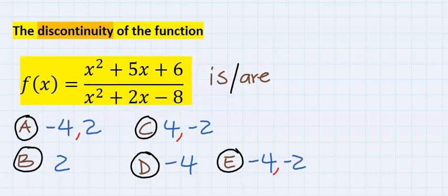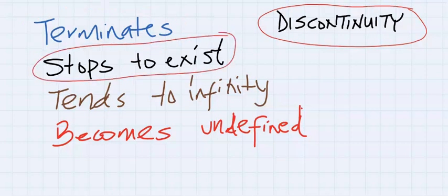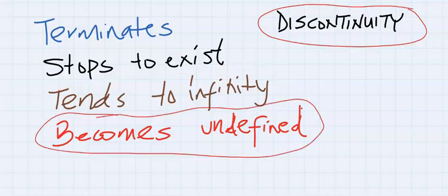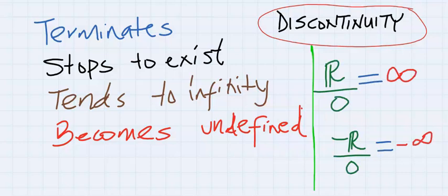Before we solve this problem, what is the discontinuity of a function? This simply means a function terminates, or stops to exist, or tends to infinity, or becomes undefined when any number divides by zero.